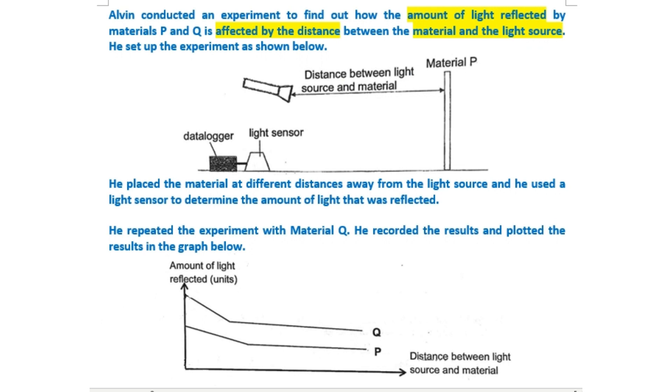He placed the material at different distances away from the light source and he used a light sensor to determine the amount of light that was reflected. He repeated the experiment with material Q. He recorded the results and plotted the results in the graph below.